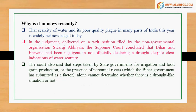The court also said that steps taken by state governments for irrigation and food grain production, tourism, or the presence of perennial rivers — which the Bihar government submitted as a factor — alone cannot determine whether there is a drought-like situation or not.